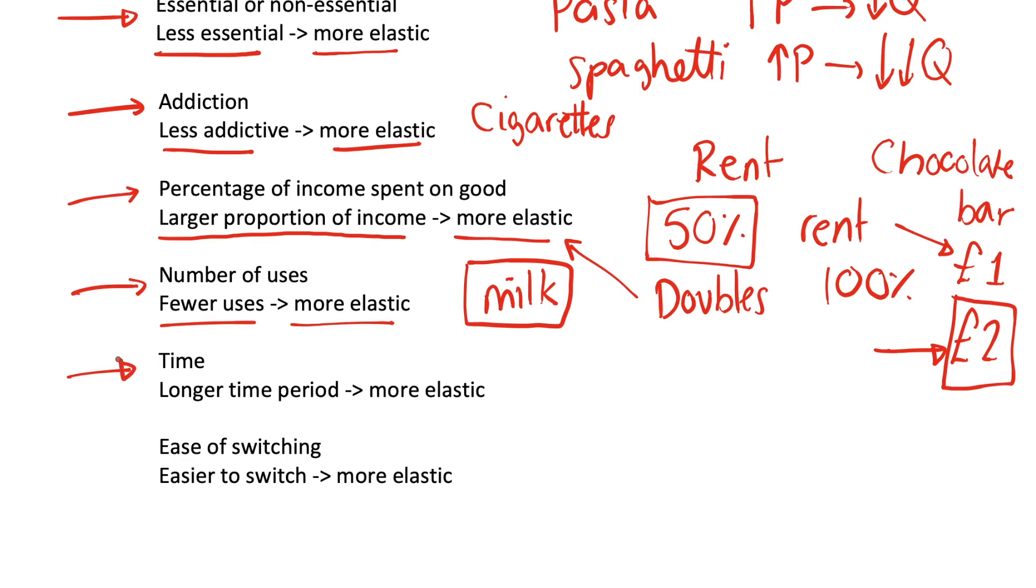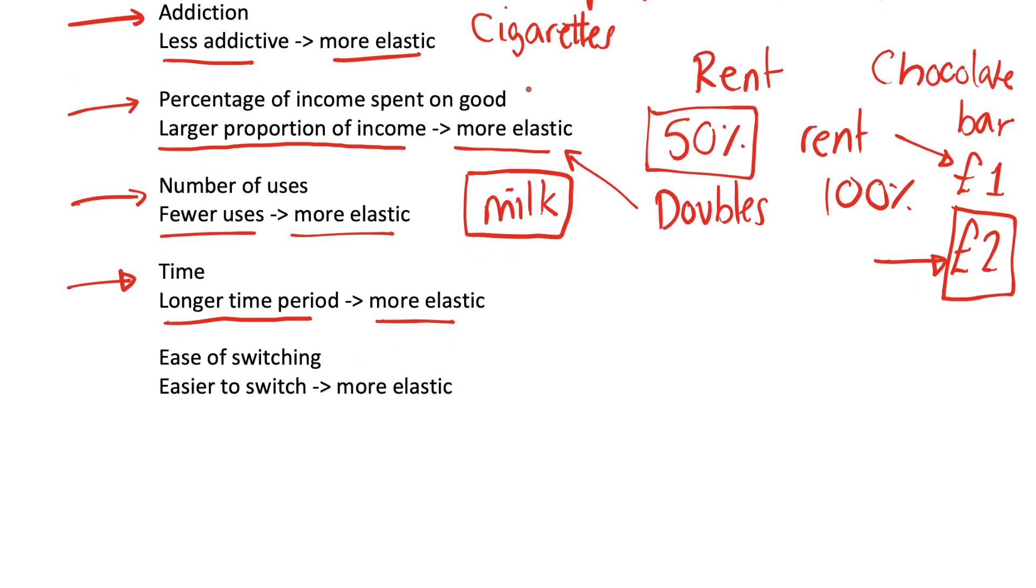A very key factor is time. So as we move over time, people are going to be very elastic to goods increasing in price because they can change their behavior. And this is linked to this final point, which is the ease of switching away from a good. So if it's easy to switch from a good to another good, it's going to be more elastic.